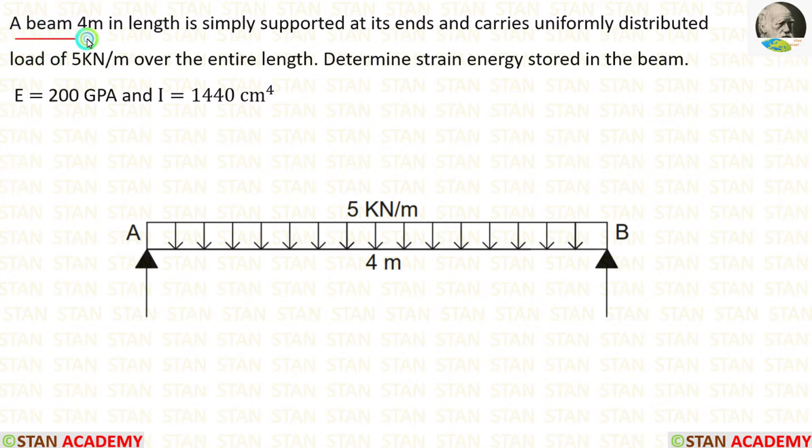A beam 4 meter in length is simply supported at its ends and carries uniformly distributed load of 5 kN per meter over the entire span. Determine the strain energy stored in the beam. E is equal to 200 gigapascal and I is equal to 1440 centimeter power 4.